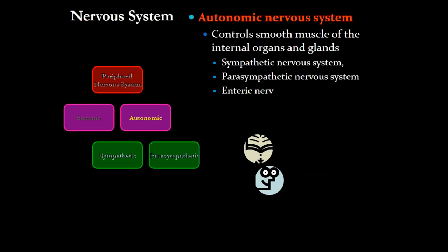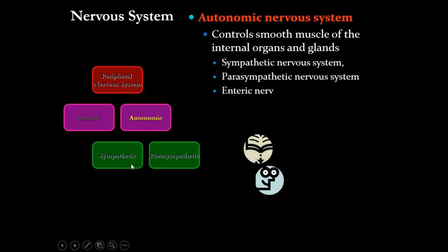The peripheral nervous system is divided into somatic (voluntary) and autonomic (involuntary). Somatic controls muscles like the biceps and triceps. The autonomic system is the sympathetic and parasympathetic. The sympathetic postganglionic releases adrenaline (fight or flight). The parasympathetic postganglionic releases acetylcholine (rest and digest), acting on muscarinic and nicotinic cholinergic receptors.